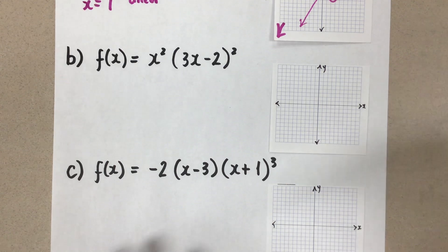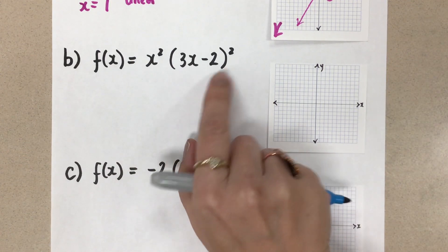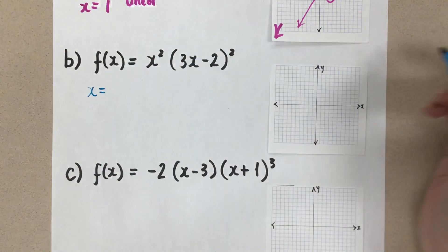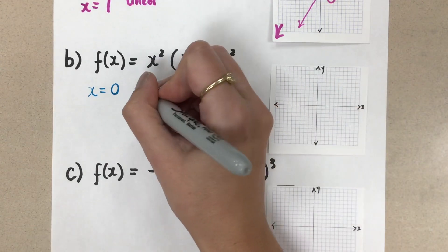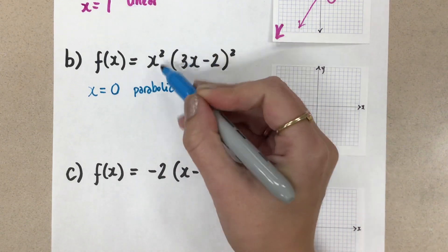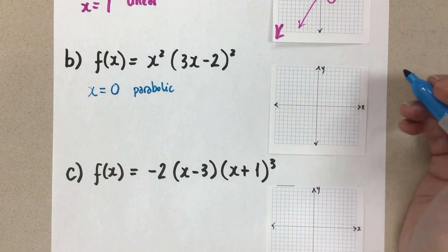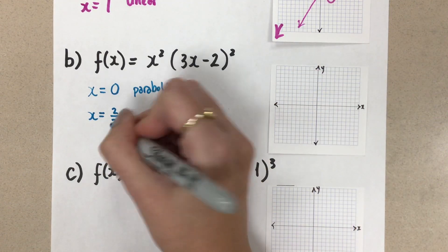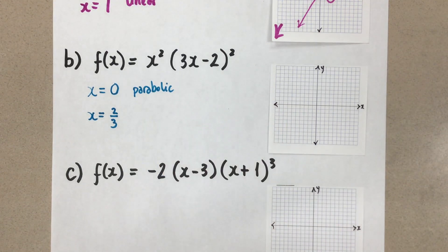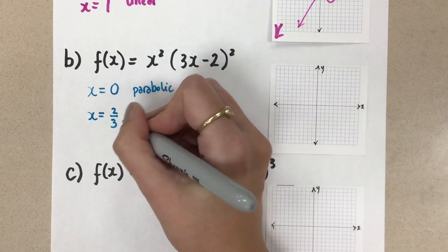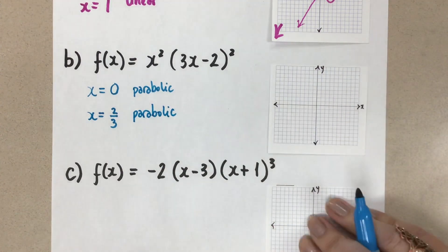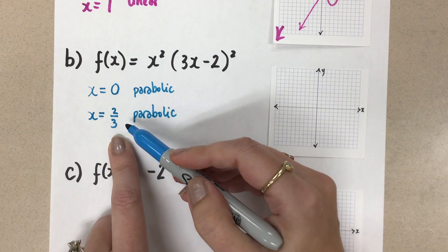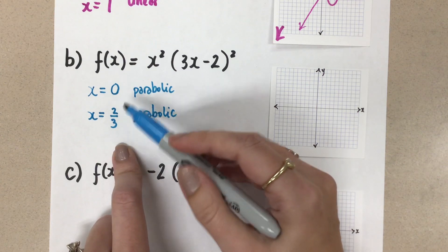Our second example is f(x) = x²(3x − 2)². This factor gives us a zero at x = 0 with exponent 2 — a double or parabolic zero. This factor gives us a zero at x = 2/3, also with degree 2 — another parabolic zero. At parabolic zeros the sketch touches the zero and bounces back, creating a mini parabola. This will happen at both points for this function.